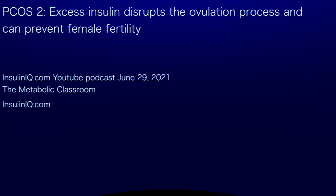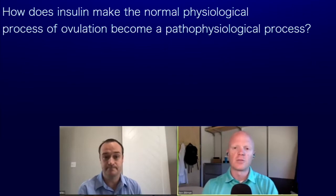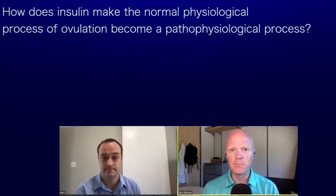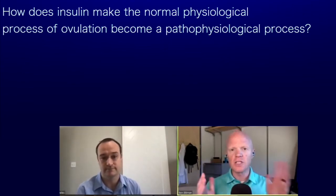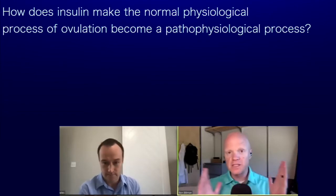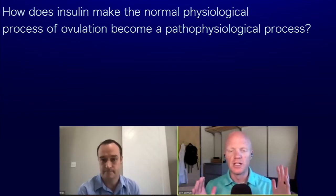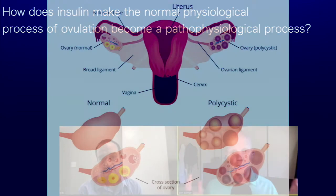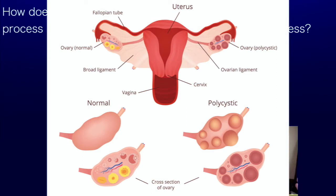PCOS Part 2. Excess insulin disrupts the ovulation process and can prevent female fertility — from the Metabolic Classroom at InsulinIQ.com. So Steve, how does insulin mess it up? How does the normal physiological process of ovulation become pathophysiological when insulin suddenly wants to join the party?